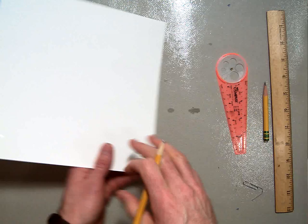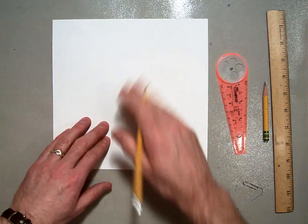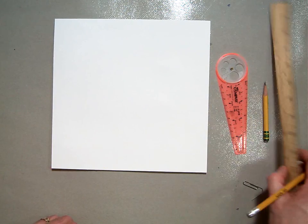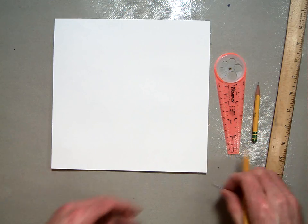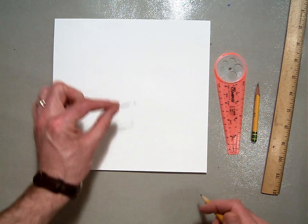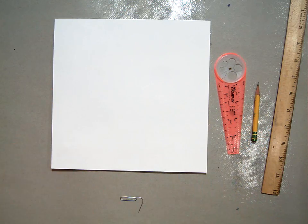Then flip your paper over and we're going to need to start using some of these supplies I have laid out. You're going to need a ruler, a compass, and a pencil. And I might have out some paper clips to hold your compass down and I'll show you how to do that in a minute.